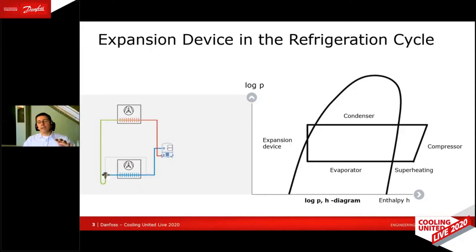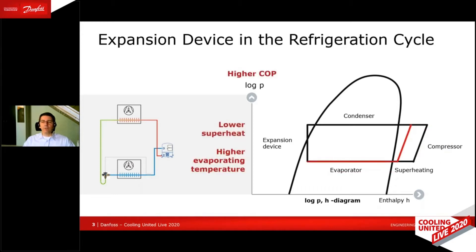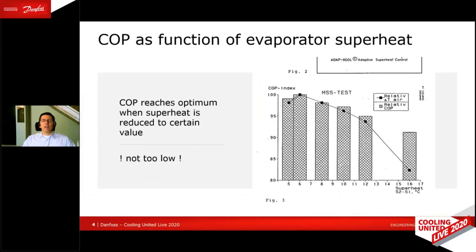If we want to make a system quite efficient, there is the possibility to play around with superheat settings. So we can reduce the superheat setting quite often. When we do that, we get a little bit of an increase in the evaporating temperature, and that helps us to have a more efficient system. The question is, how much can we reduce the superheat?